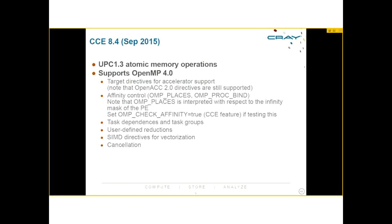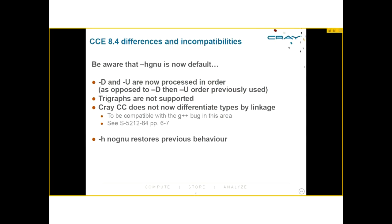With the HGNU default in 8.4, there are some subtleties to be aware of: the order that defined and undefined options are processed has changed. Try-graphs are not supported. Cray CC now incorporates a long-standing GNU bug for compatibility reasons — if you care about differentiation by linkage, refer to document S-5212-84 on the Cray documentation website. Also, the default ATP behavior has swapped regarding whether to allow the system to create a stack trace when your application is killed by the scheduler — be aware of this if you rely on stack traces at timeout.